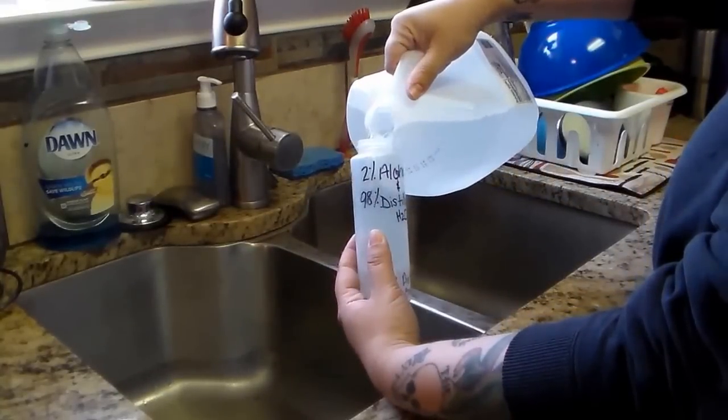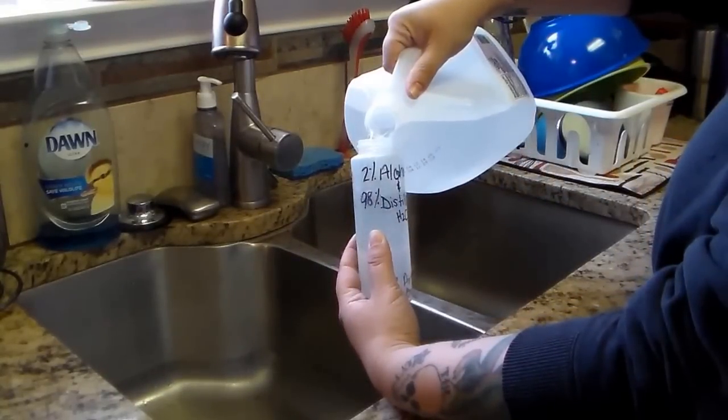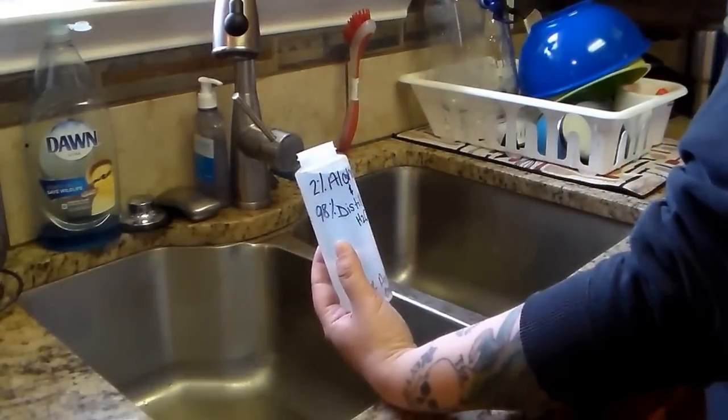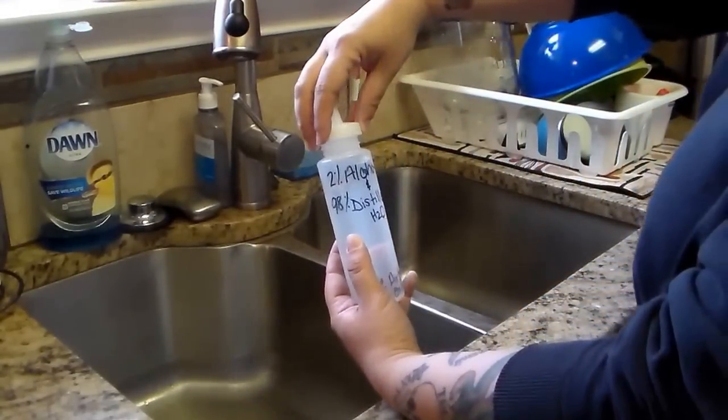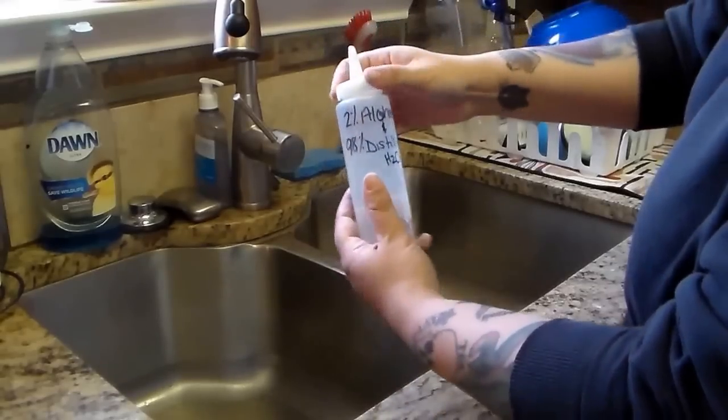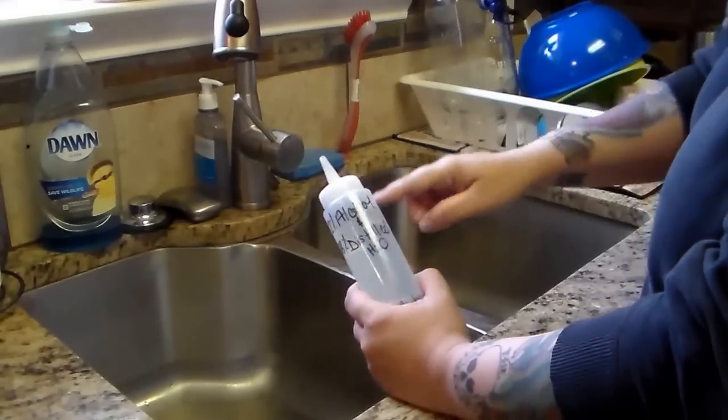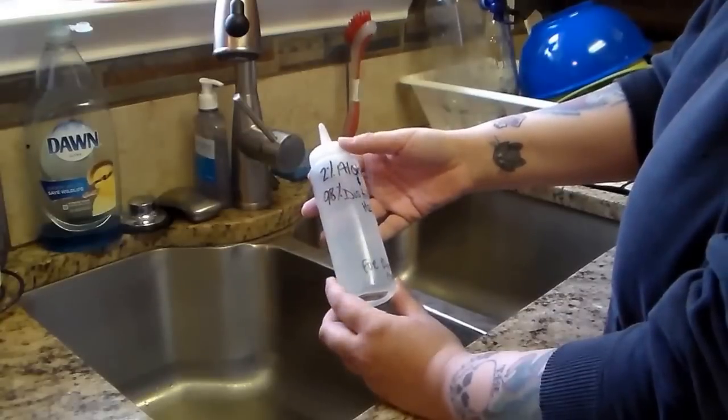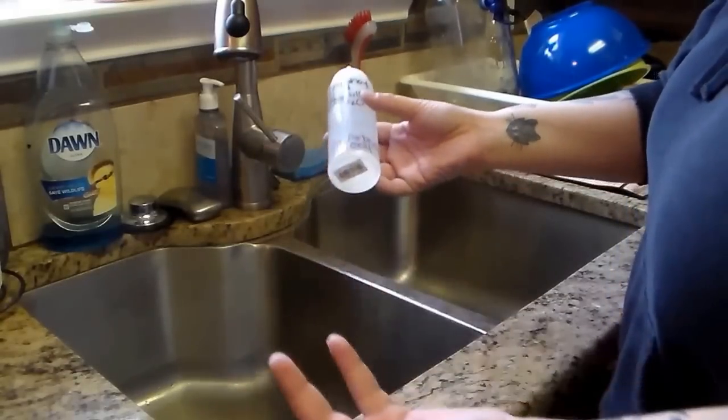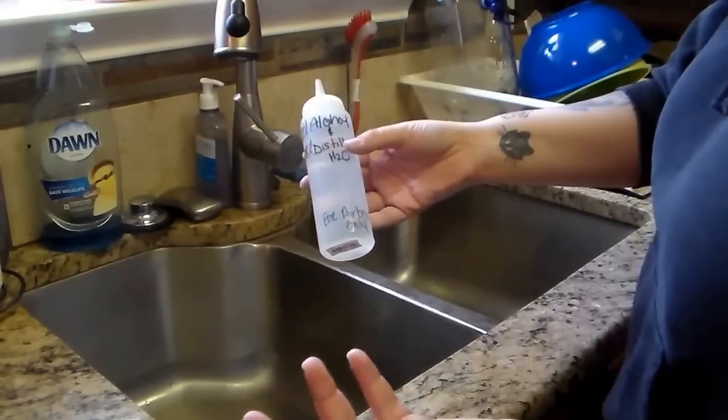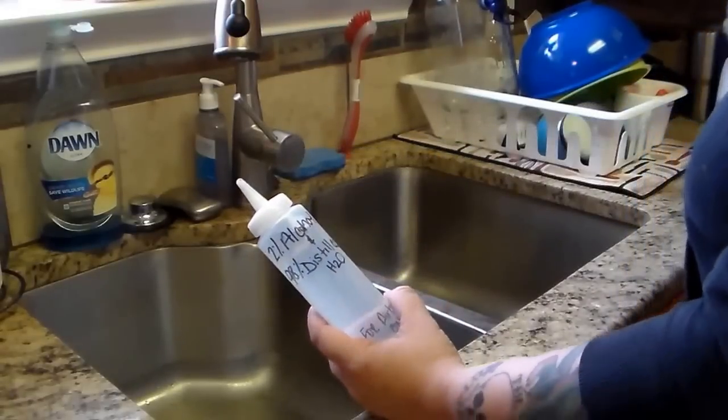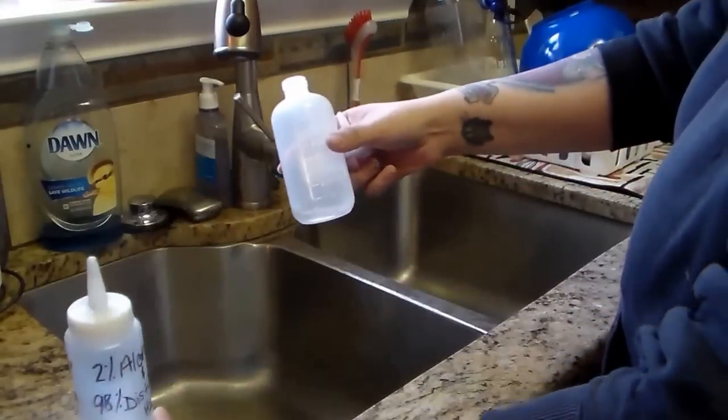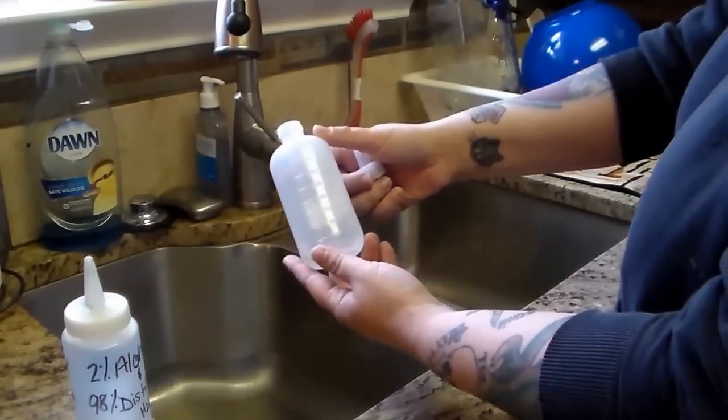And then you put your cap on. This bottle I got at Sally's Beauty Supply, and this was about less than a dollar. You can also use like ketchup and mustard bottles, whatever you can find in a 99-cent store. You don't have to go crazy or anything, but this is basically what we use. We have multiple bottles for this, actually here's another one that we have.